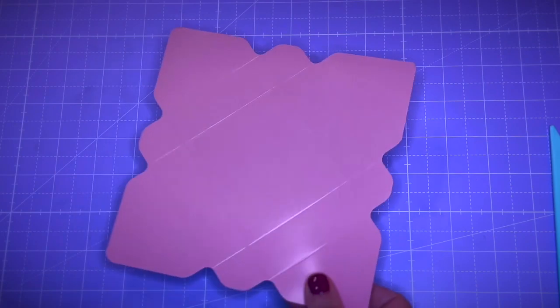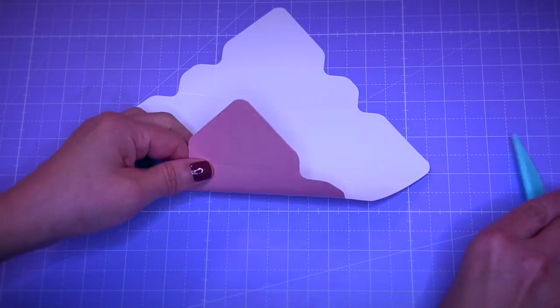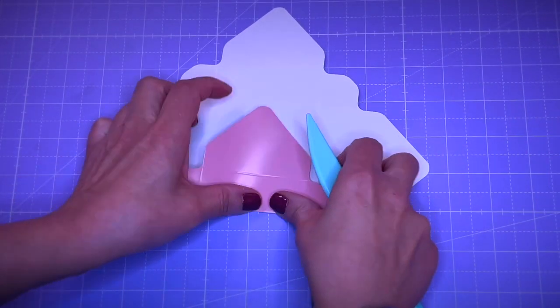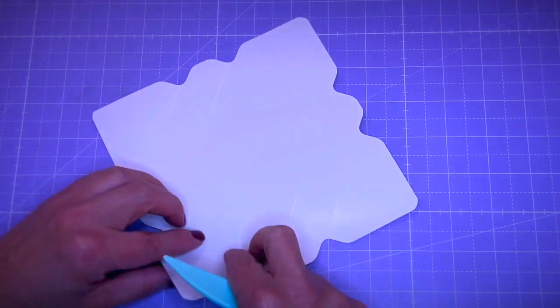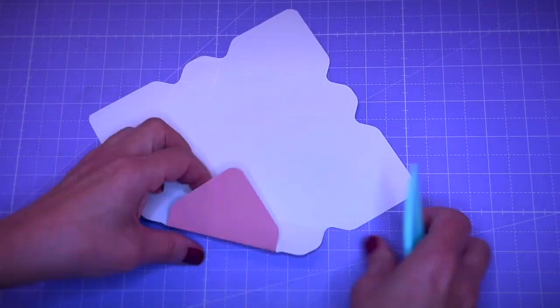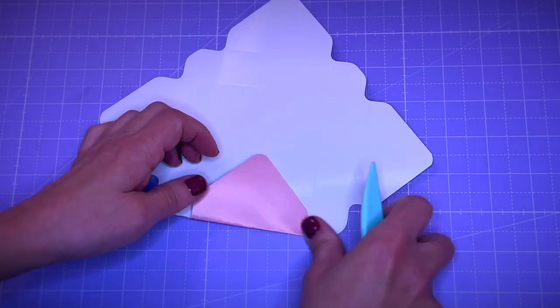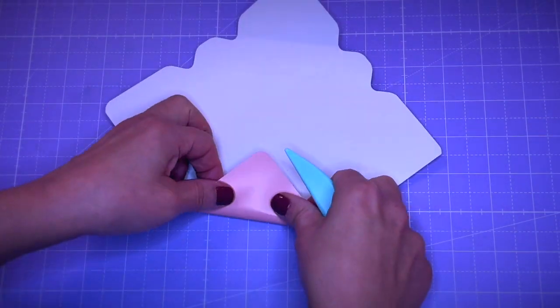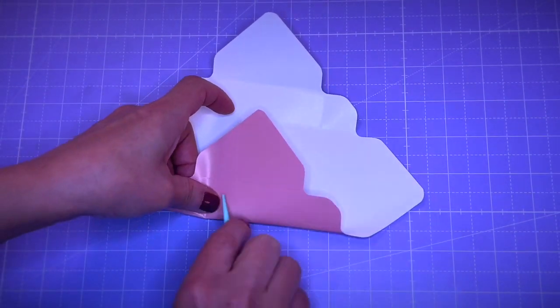I am going to go ahead and fold along all these scored lines. I am using my bone folder because I think it is practical and easy. And go ahead and just fold along all the grooves.